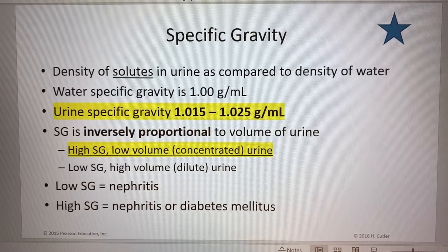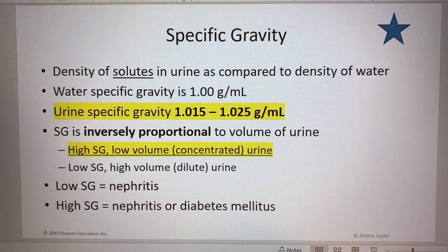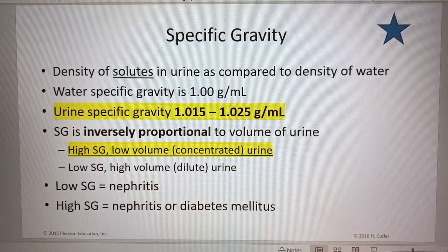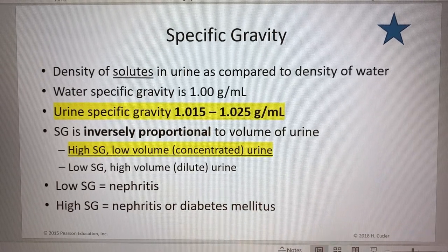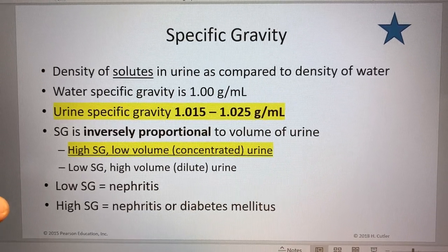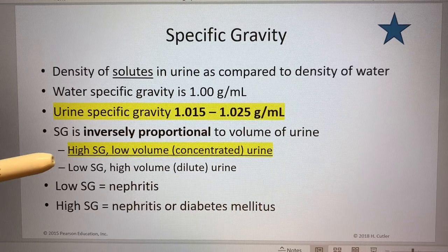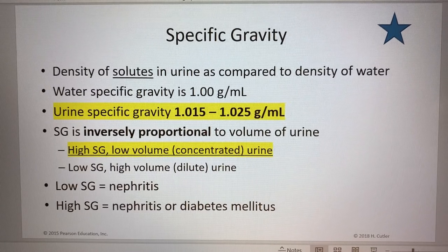Concentrated urine might mean the presence of protein or sugar, and/or the person could be dehydrated so the urine is more concentrated than usual — it has more stuff because the person doesn't have as much water. It's not always pathological unless it reflects a pathological state of dehydration. The person could just be mildly dehydrated. Low specific gravity means the urine is dilute — not a lot of stuff in it, and a high volume, or a lot of water.